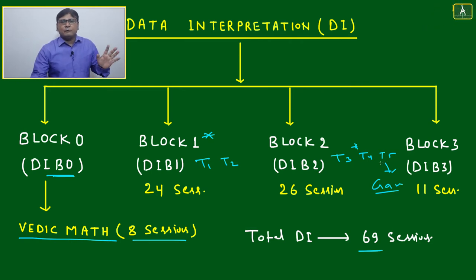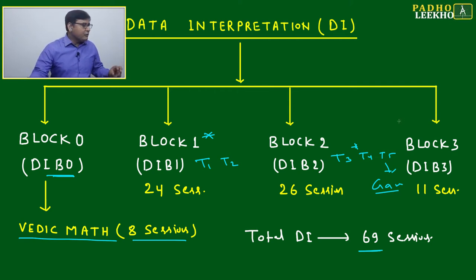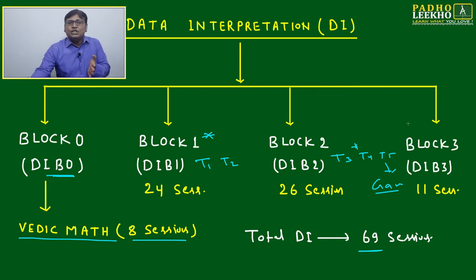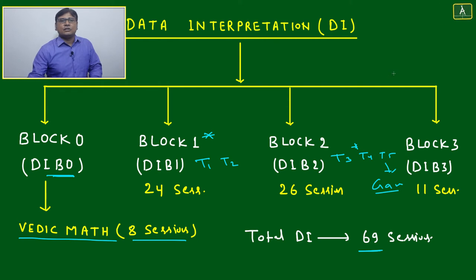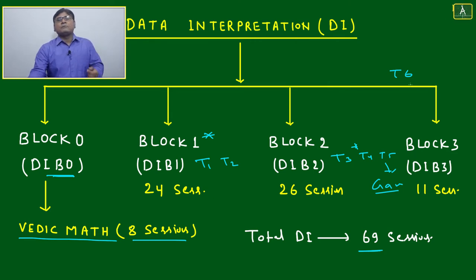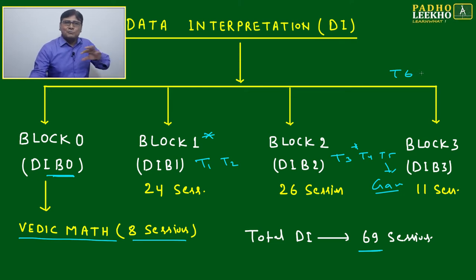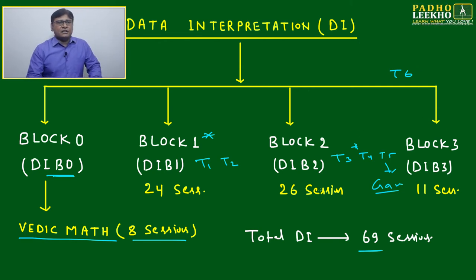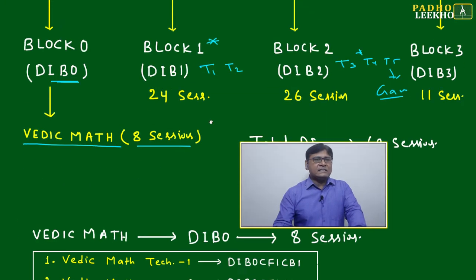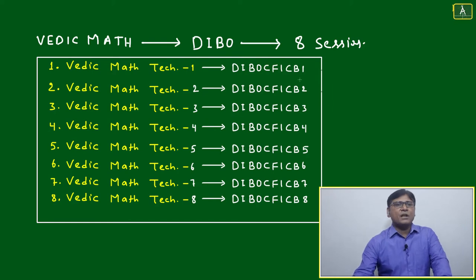I've discussed all types of game-based DI caselets covering every scenario — more than 10 to 12 caselets in Type 5, giving you enough confidence to deal with any game-based caselet. Block Three introduces a new type of DI caselet based on data science and statistics, because this is the new trend. I've introduced Type 6 based on data science and statistics. In the last few years this type of caselet keeps increasing in CAT, since MBA is now centered on data. After that, Type 7 and Type 8 are also there.